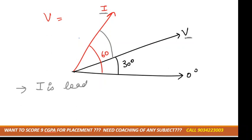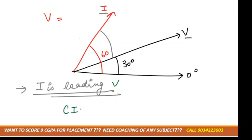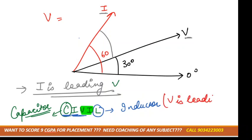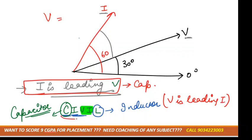Current is leading. So if current is leading, which case is this — capacitor or inductor? Remember the word CIVIL: C stands for capacitor, and in a capacitor current leads the voltage. L stands for inductor, where V comes first, so voltage leads current. This is the method to remember which quantity leads in each case.